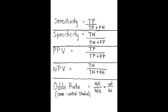What is the equation for negative predictive value? Negative predictive value is true negative over true negative plus false negative.